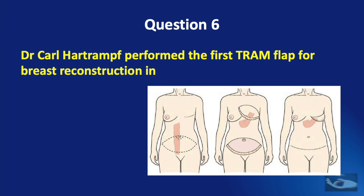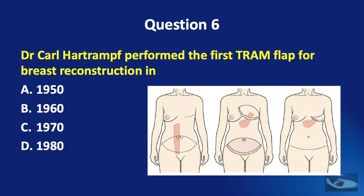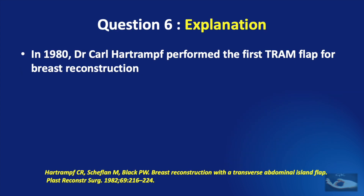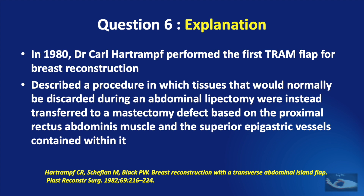Question No. 6. Dr. Karl Hartramff performed the first TRAM flap for breast reconstruction in 1950, 1960, 1970, or 1980? The correct answer is 1980. It was in 1980 that Dr. Karl Hartramff performed the first TRAM flap for breast reconstruction. He described it as a procedure in which tissues normally discarded during an abdominal lipectomy were instead transferred to a mastectomy defect based on the proximal rectus abdominis muscle and the superior epigastric vessels contained within it.